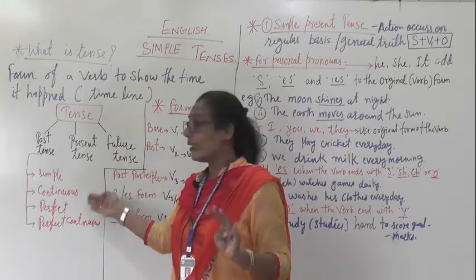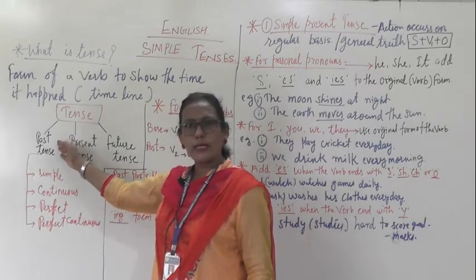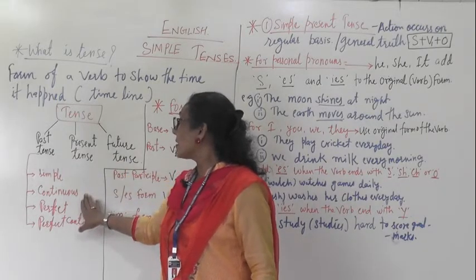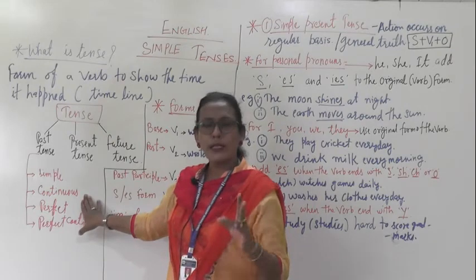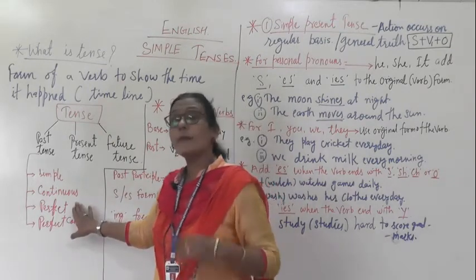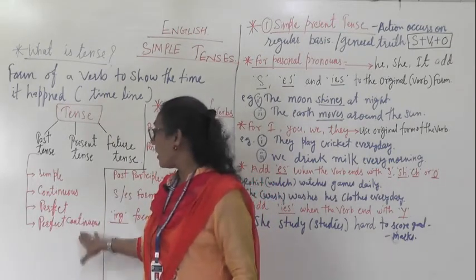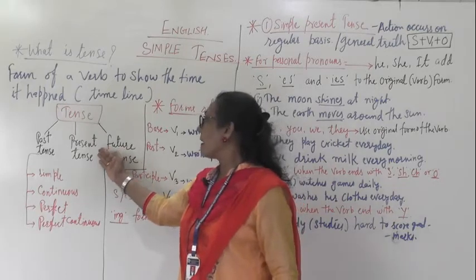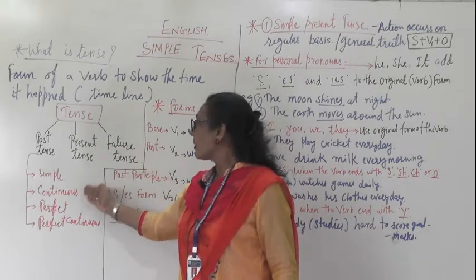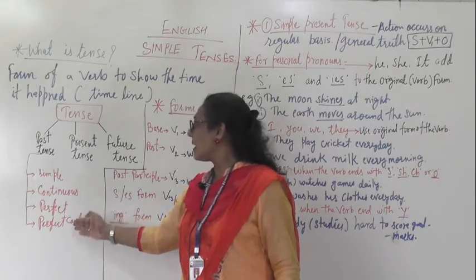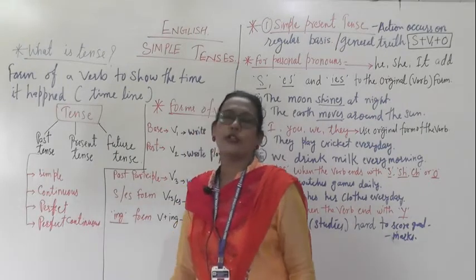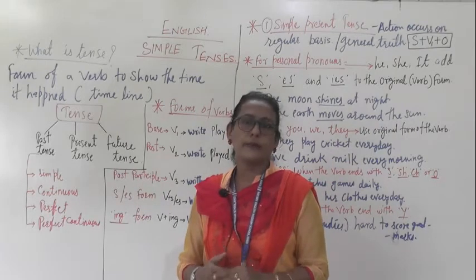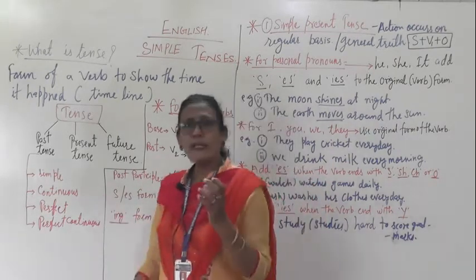Past tense is divided into four: simple past tense, past continuous tense, past perfect tense, and past perfect continuous tense. The same applies to present tense: simple present tense, present continuous tense, present perfect tense, and present perfect continuous tense. In this way we are going to see these tenses. But first, what is meant by simple?